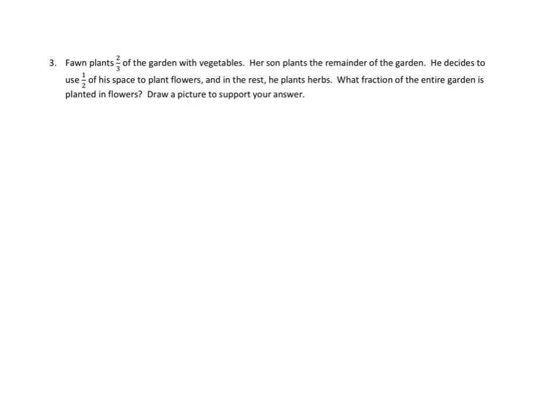Well, let's take a look at a story problem from tonight's homework and see if we can do that. We're going to use our read, draw, and write strategy. So let's go ahead with the reading: Fawn plants two thirds of the garden with vegetables. Her son plants the remainder of the garden. He decides to use one half of his space to plant flowers, and the rest, he plants herbs. What fraction of the entire garden is planted in flowers? Draw a picture to support your answer. Okay. So we've got Fawn planting vegetables, her son planting some flowers and some herbs, and then we're asked to answer what fraction of the entire garden is in flowers. We have to have a picture.